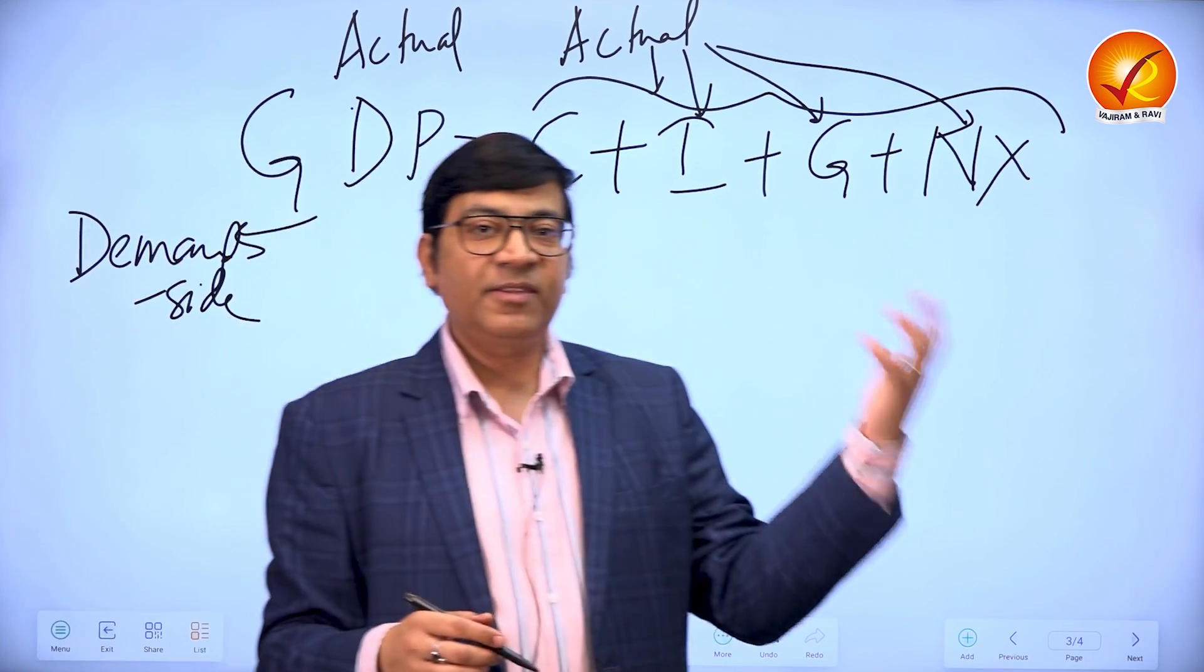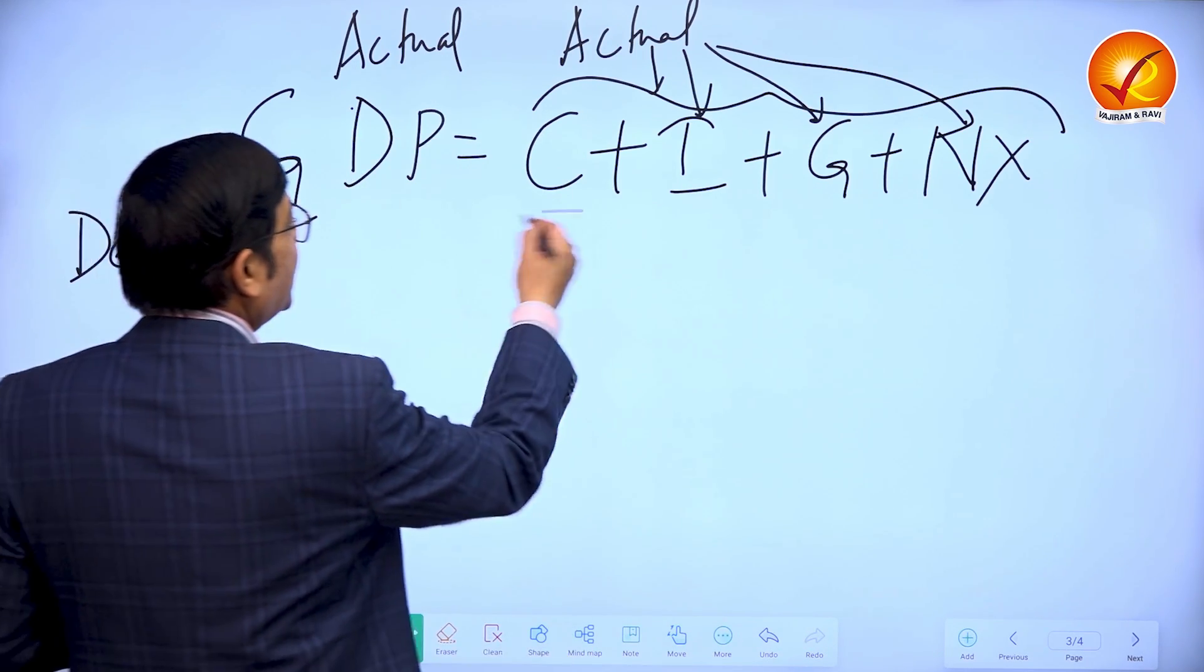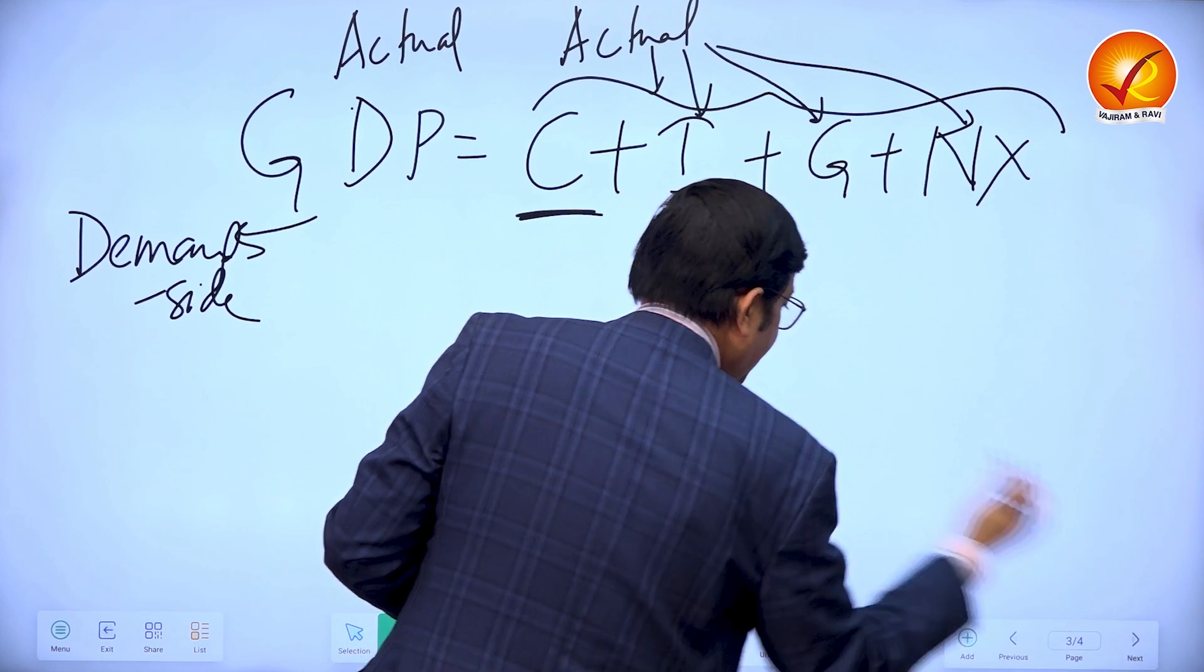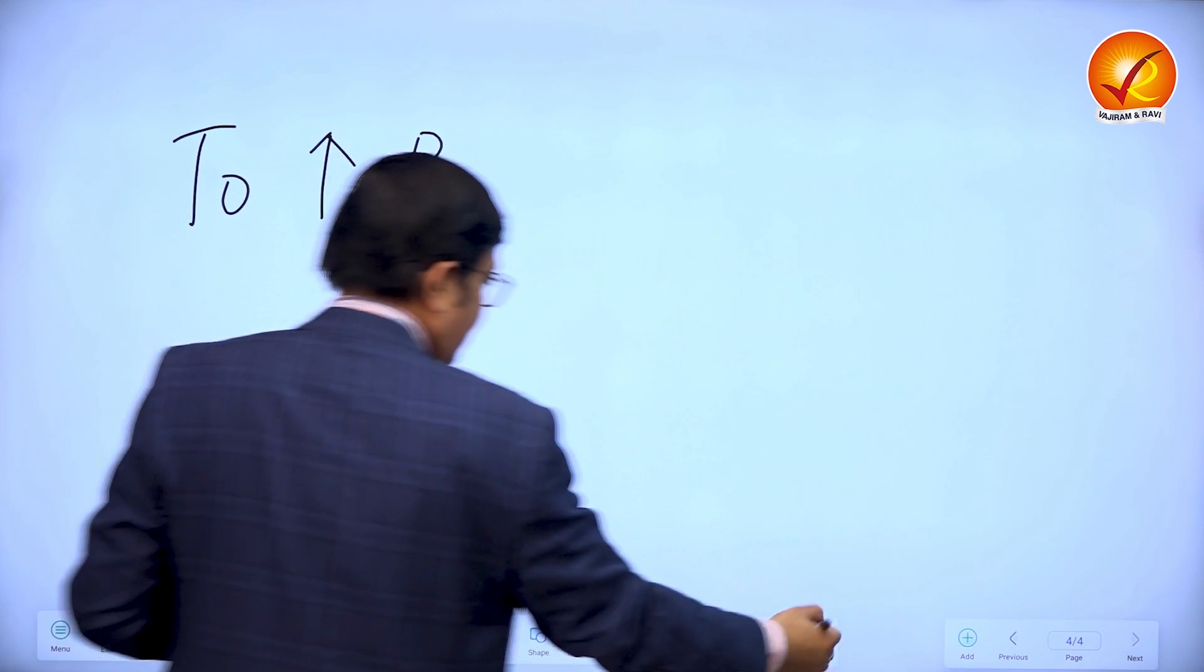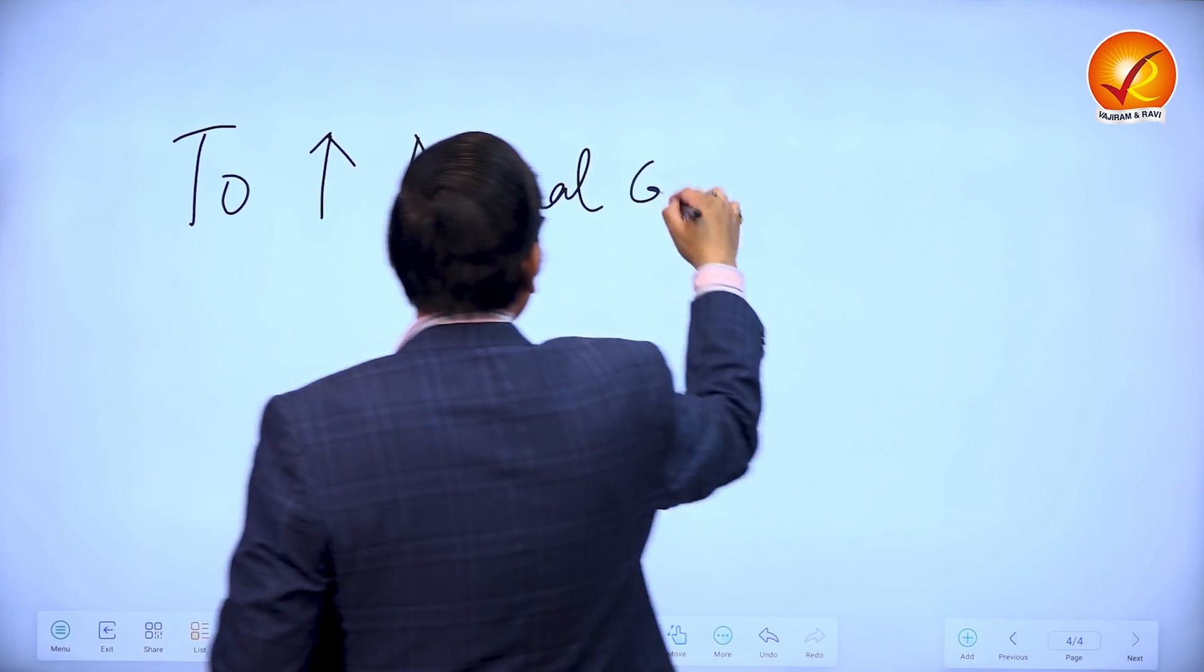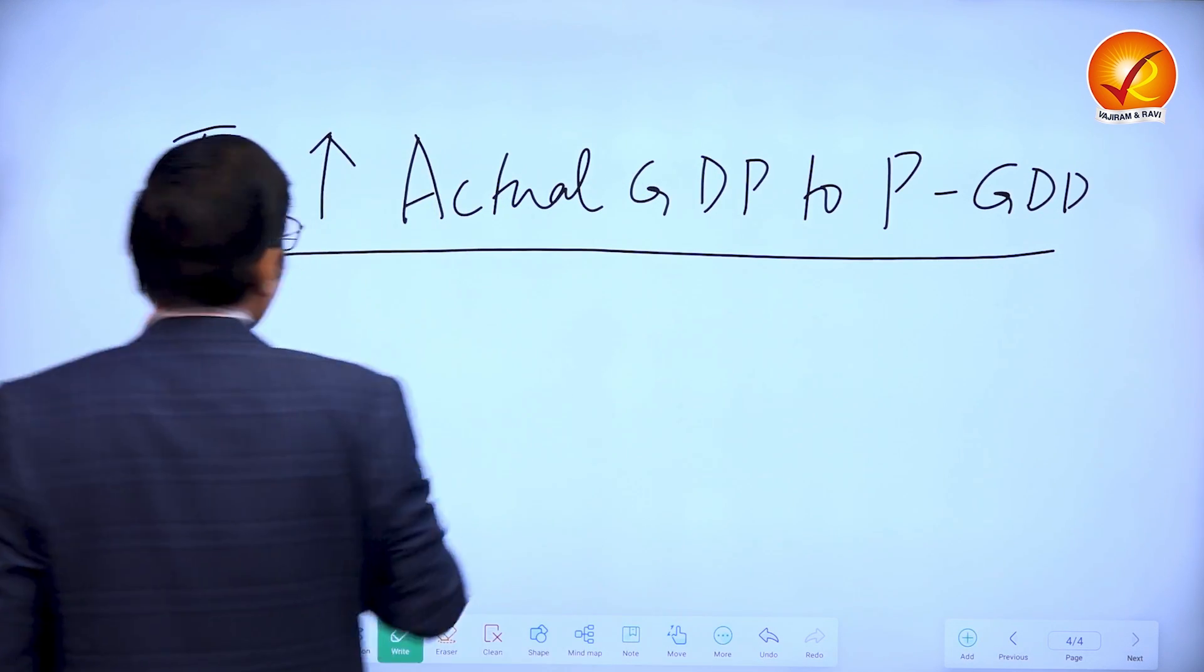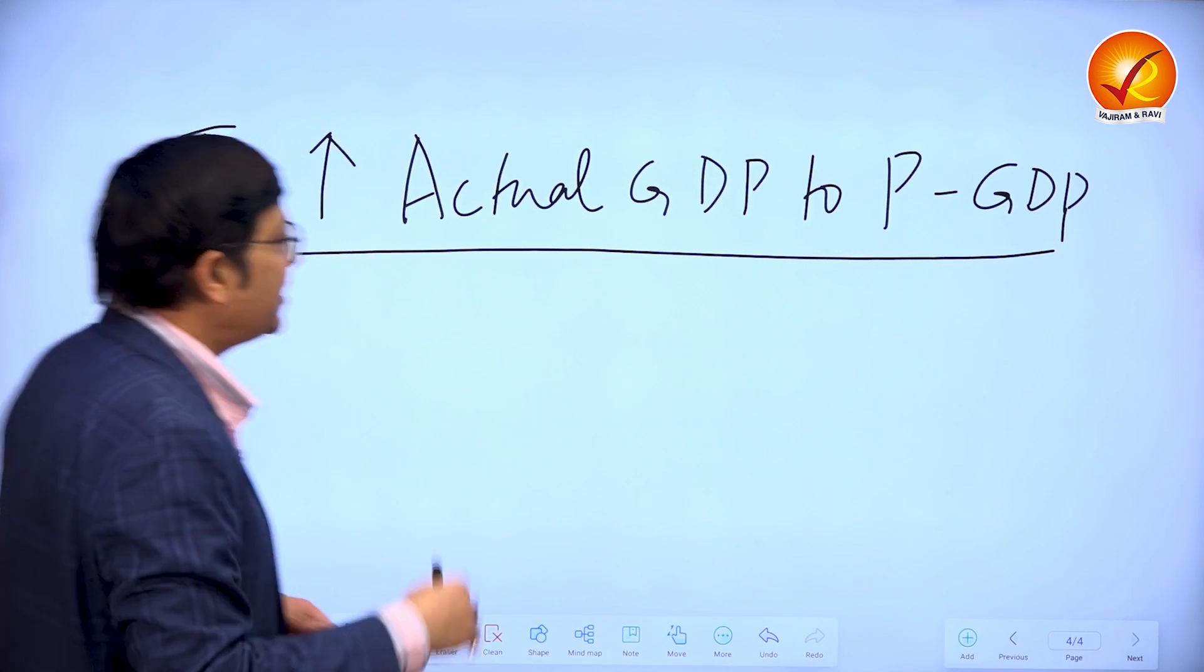There are some 3-4 arguments that can be made out over here. How can potential consumption be increased? To increase potential consumption, the way to put it is this: to increase the actual GDP to potential GDP. In general, actual GDP is lower than the potential GDP. In order to take it to the level of potential GDP, what steps can be taken?